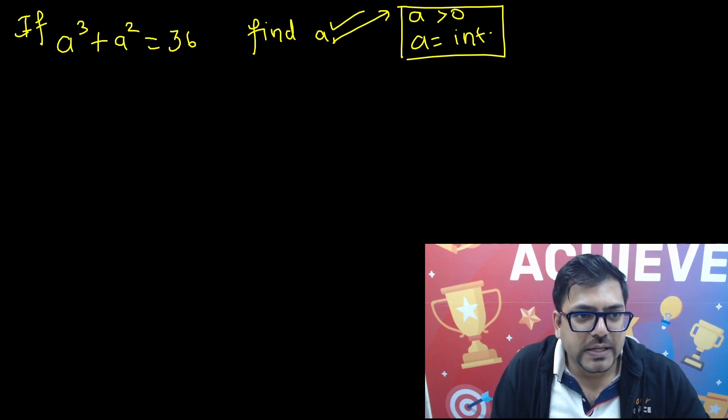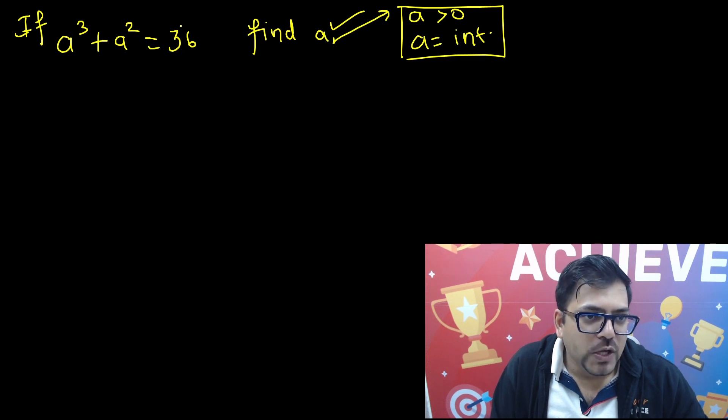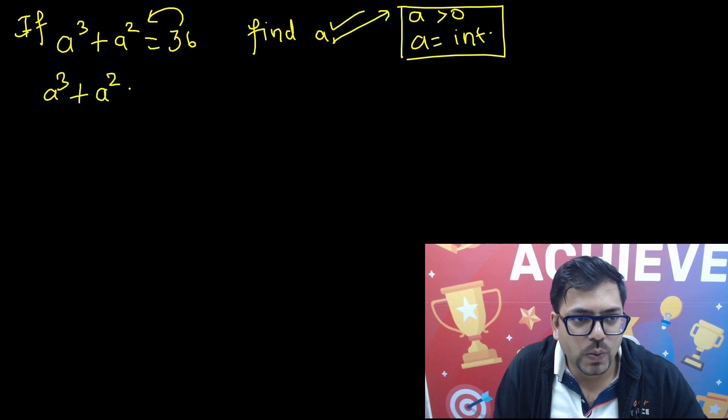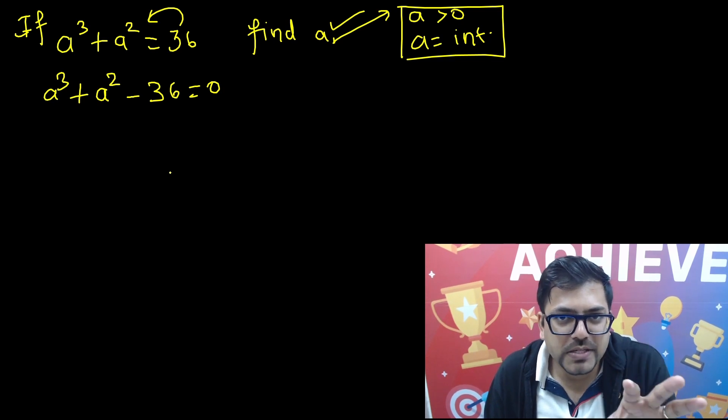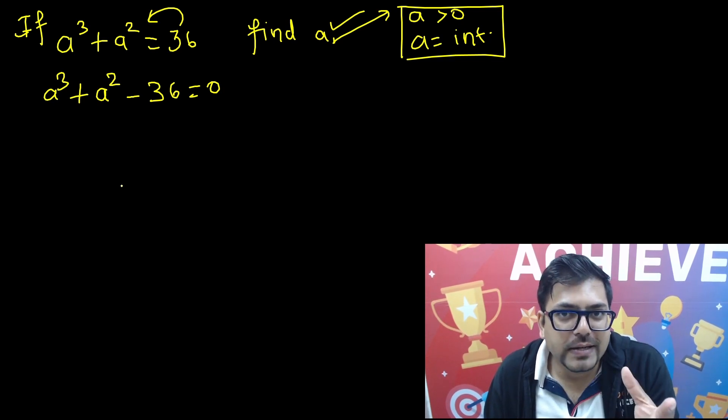Now we have got a³ + a² = 36. This is a pure cubic equation so I can just send this to the other side and we will get a³ + a² - 36 = 0. For solving the cubic equation we all know the easiest and best method is to do the hit and trial method.